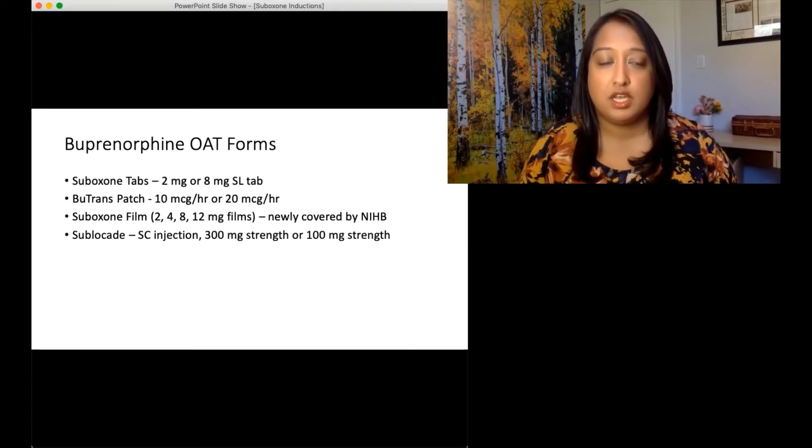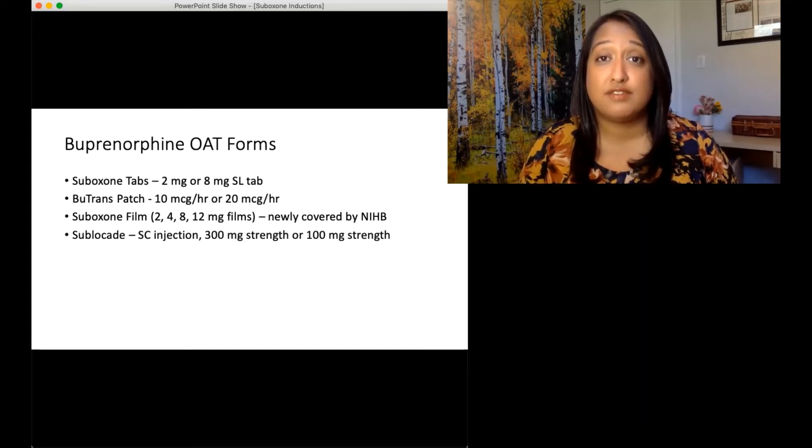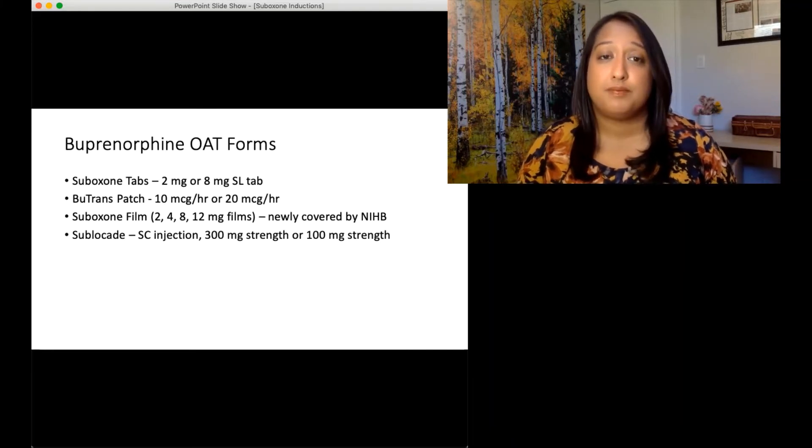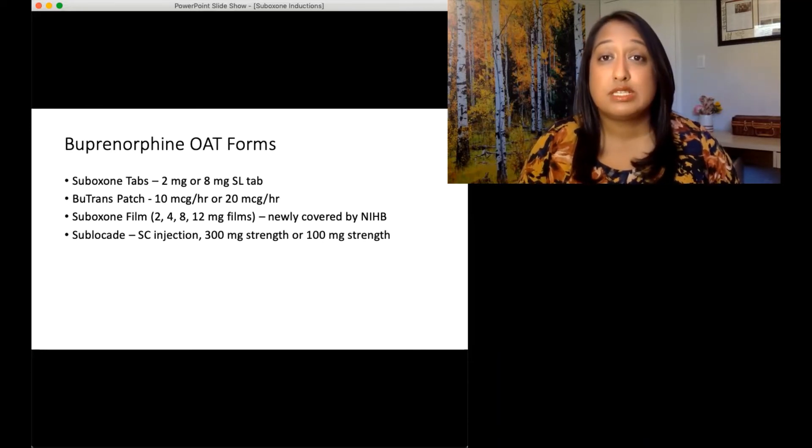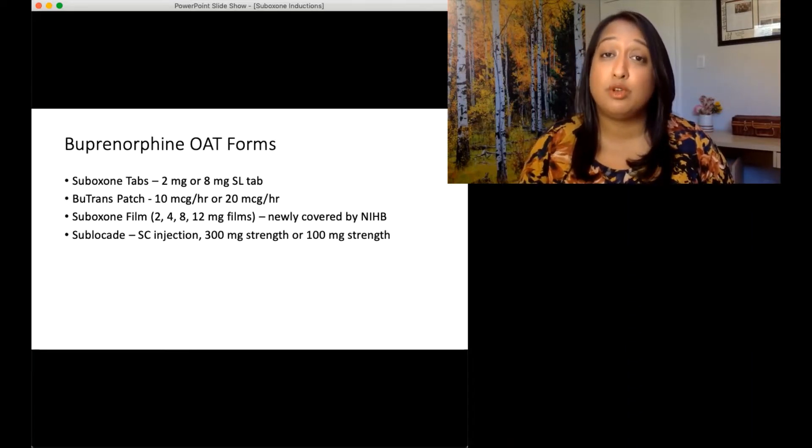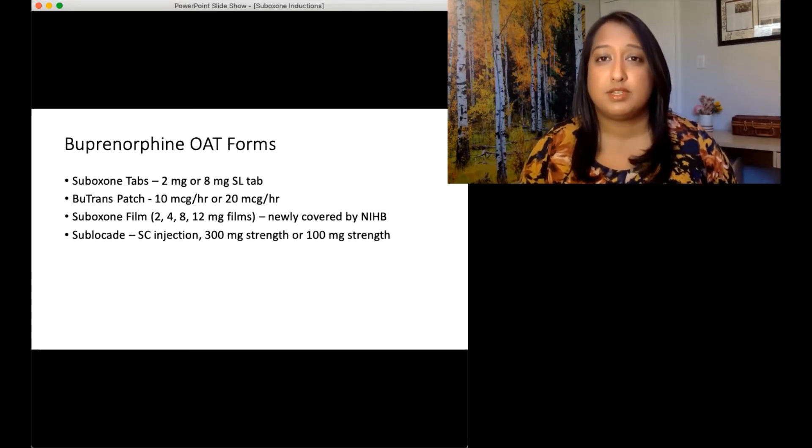There's different forms of buprenorphine. So there's Suboxone tabs, that's two milligram or eight milligrams sublingual tabs. There is the Butrans patch, which is very low dose. It's 10 micrograms an hour or 20 micrograms per hour. It is not covered. So it's very expensive to have in community. We typically only use it in acute care. There's a Suboxone film, two milligram, four milligram, eight milligram and 12 milligram films. These are now newly covered by NIHB, which is excellent. These films can be really helpful for patients, especially because some patients really do not like the taste of the Suboxone.